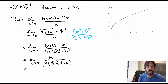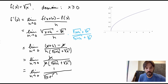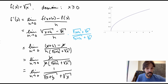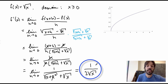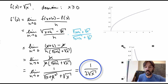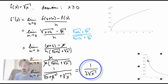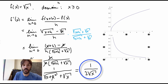Just as before, I can cancel the h's, leaving a nice simple expression. I can now evaluate the limit by setting h to zero, giving 1 over (√x + √x), which is equal to 1 over 2√x. This is the derivative of the square root function. Its graph is consistent with the interpretation of the derivative as the slope of the tangent line.